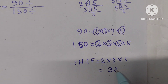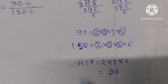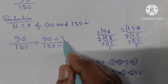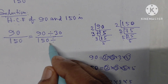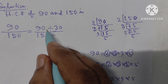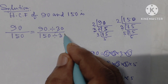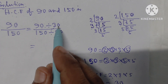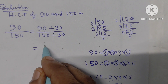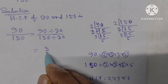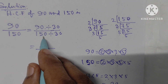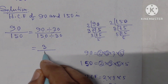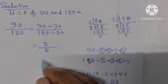Now we have to divide both numerator and denominator by 30. If we divide 90 by 30, we get 3. If we divide 150 by 30, we get 5. So the result is 3 by 5.